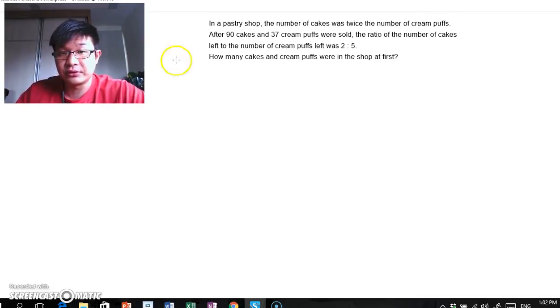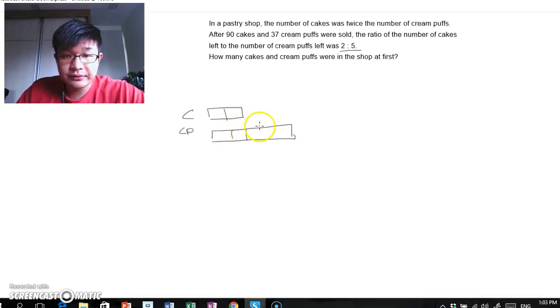To do this, we first of all need to note the final ratio of cakes to cream puffs is 2 to 5. So this would mean that the model that I'm going to draw, cakes will get 2 units, whereas cream puffs is going to get 5 units: 1, 2, 3, 4, 5. Now this is after what was sold.